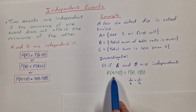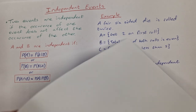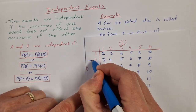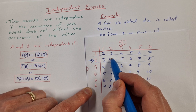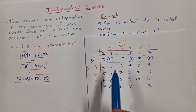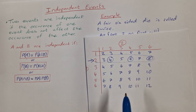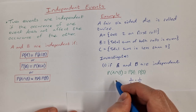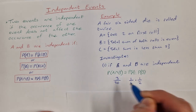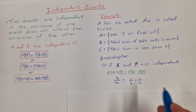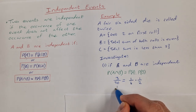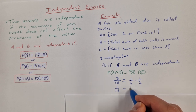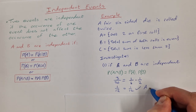Now we look at the probability of A intersection B — getting a 2 on the first roll and the total being even. Going back to the grid, if we get a 2 on our first roll, we're in this row here. The even sums are 4, 6, and 8, so that's 3 out of 36. Is 3 over 36 equal to 1 over 6 times 1 over 2? 3 over 36 simplifies to 1 over 12, and 1 over 6 times 1 over 2 is also 1 over 12. So A and B are independent.